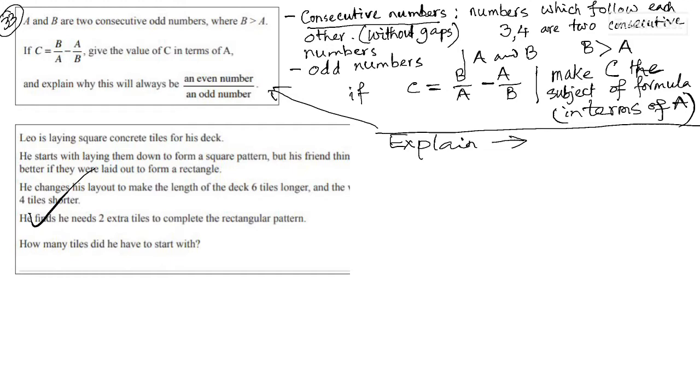A and B are two consecutive numbers. So the numbers which follow each other without gaps, for example, 3 and 4 are two consecutive numbers.